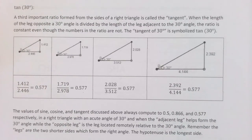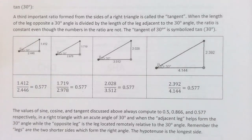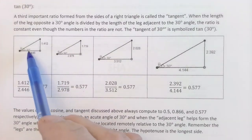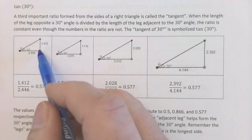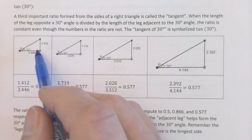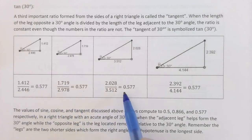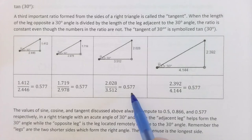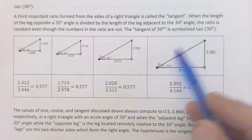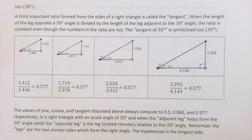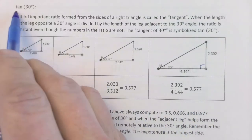The third important ratio is called the tangent. With the tangent we don't use the hypotenuse at all. If you have a right triangle with a 30-degree angle, dividing the opposite leg by the adjacent leg — opposite over adjacent — results in a ratio of 0.577. This is consistent regardless of the size of the right triangle; as long as you have a right triangle with a 30-degree angle, the tangent of 30° is always 0.577.